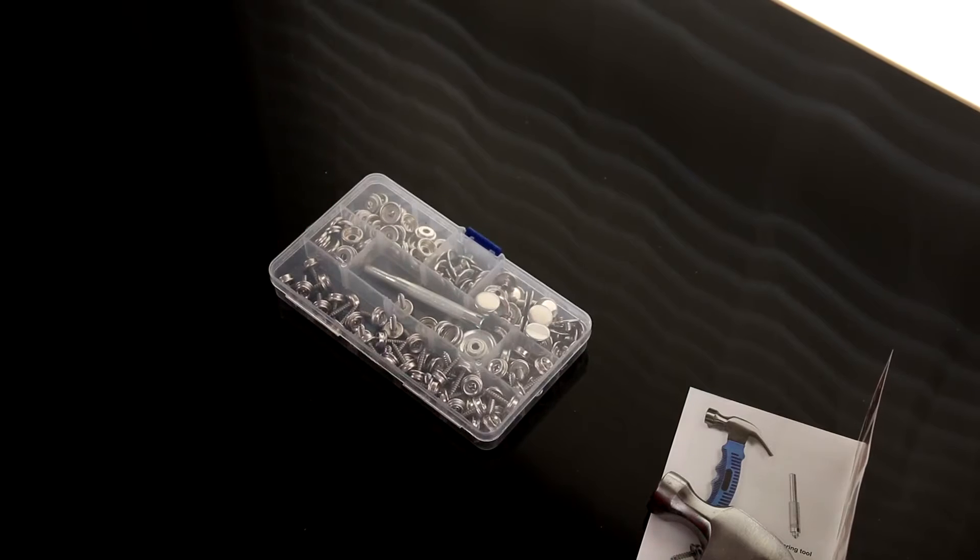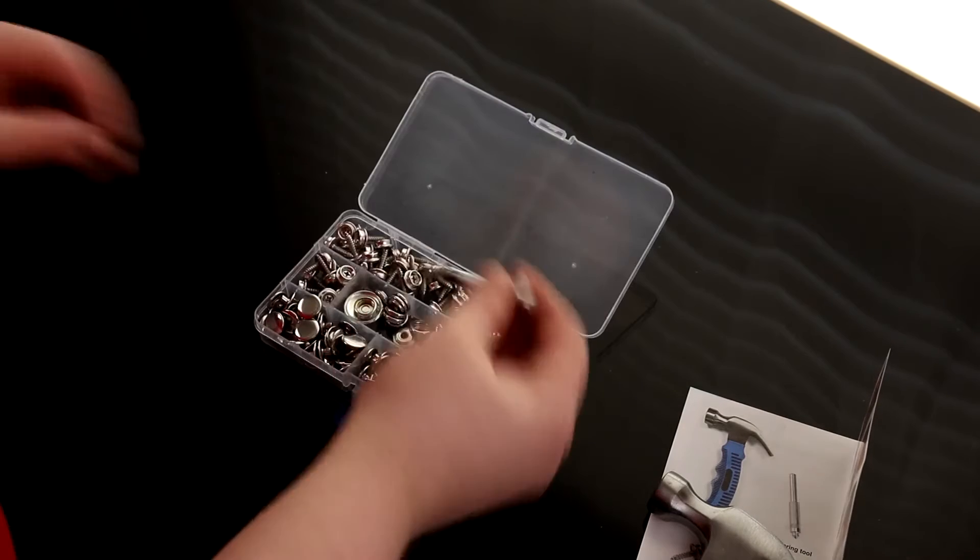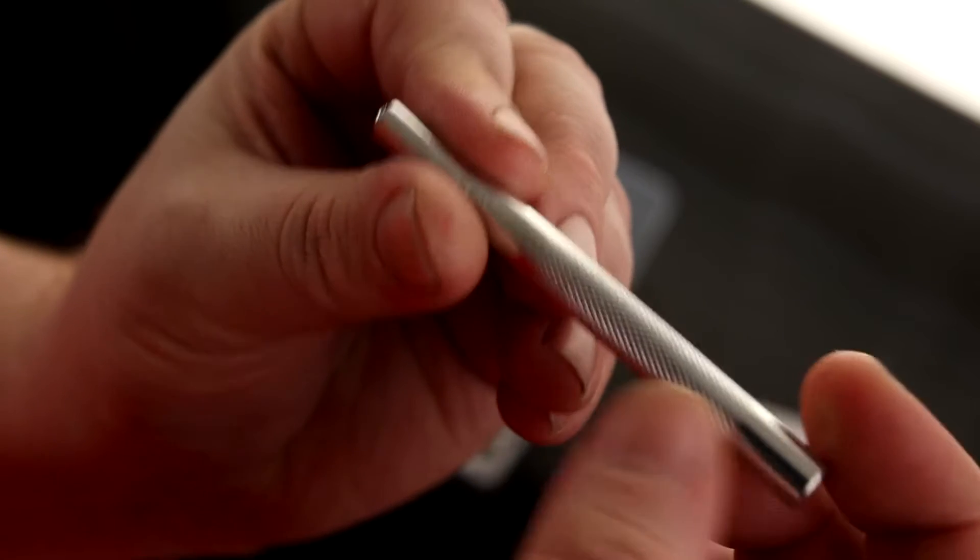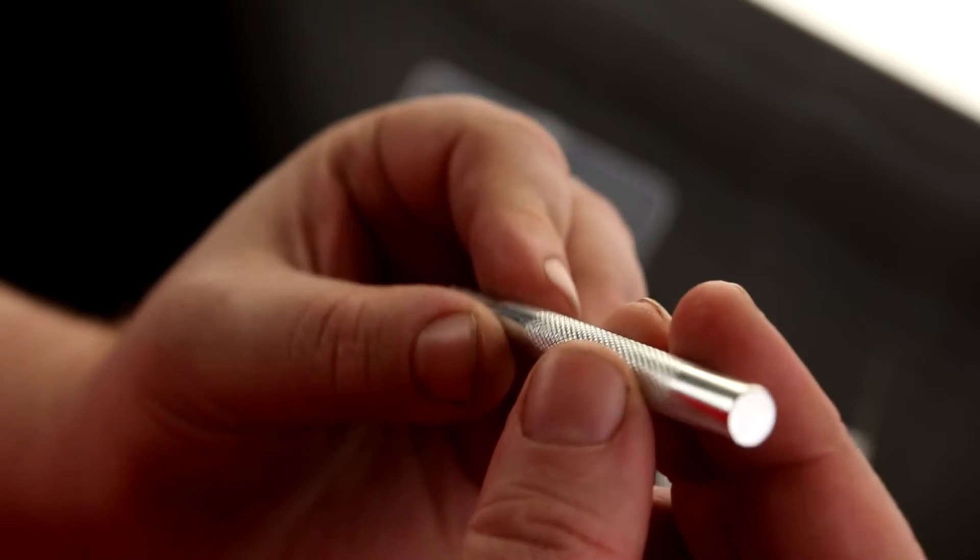And then here is the main guts. So first we got the punch. It's kind of nice. You can tell it actually has a knurled grip on here so it's easy to hold onto.